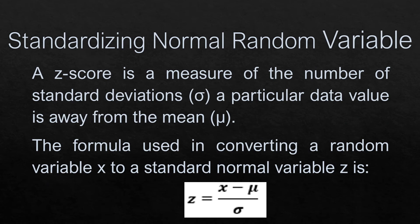A Z-score is a measure of the number of standard deviations a particular data value is away from the mean. The formula used in converting a random variable X to a standard normal variable Z is Z equals X minus the mean divided by the standard deviation.